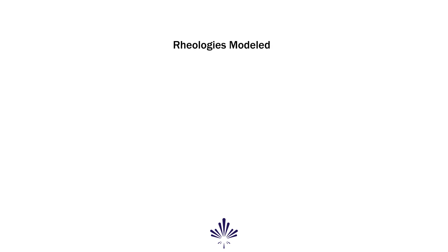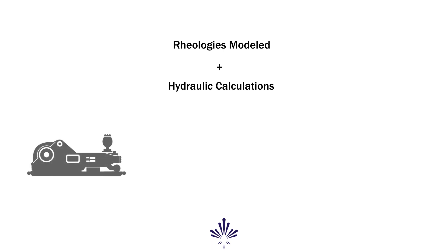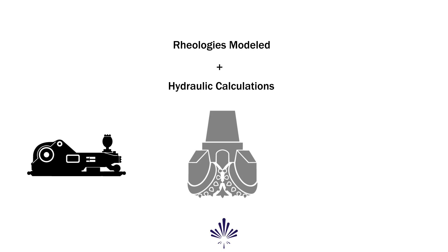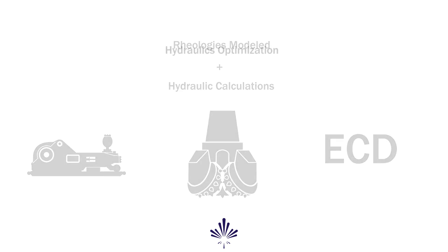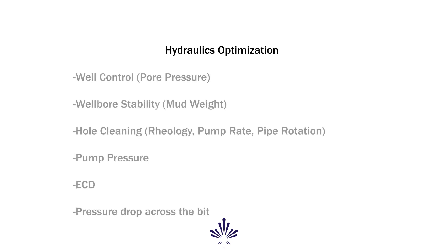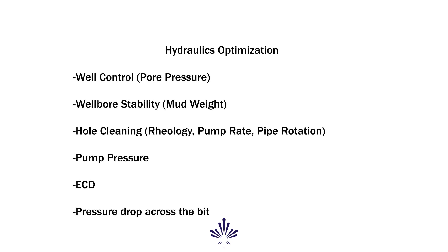After accurately modeling rheological properties of a given fluid and flow behavior is predicted, hydraulic calculations can be performed to model the fluid's effect on well pressures. From this, we can calculate pump pressures, pressure loss across the bit, and annular pressure loss termed equivalent circulating density or ECD. Hydraulics optimization can then be run, which involves balancing multiple factors including well control, wellbore stability or mud weight, hole cleaning — which is a function of rheology, pump rate, and pipe rotation — pump pressure, ECD, and pressure drop across the bit.